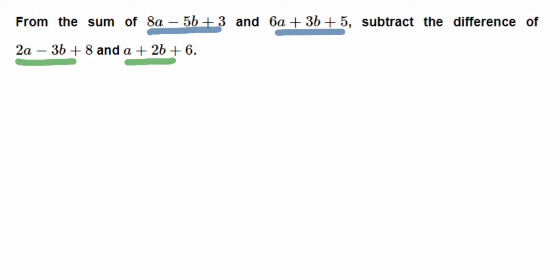The ones underlined in blue we have to add, and the ones underlined in green we have to subtract. Then both results we subtract again. So first we find the sum, then we find the difference, and then we subtract. Let's start solving.